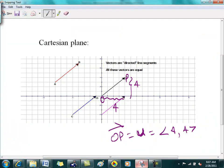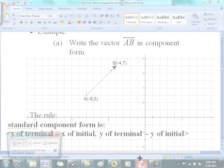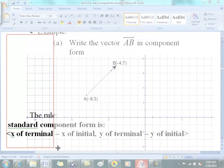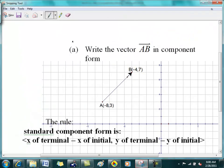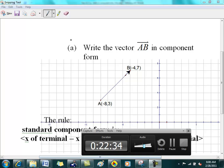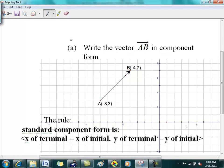Here's an example. The vector in geometric form is given as AB with its A coordinate or starting coordinate negative 8 comma 3 - that's your A - and your B coordinate is negative 4 comma 7.